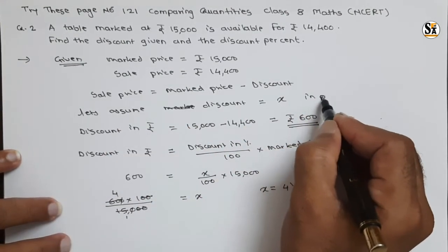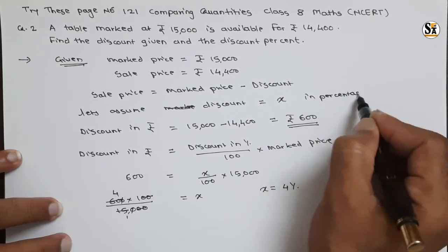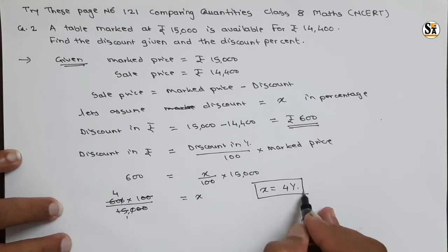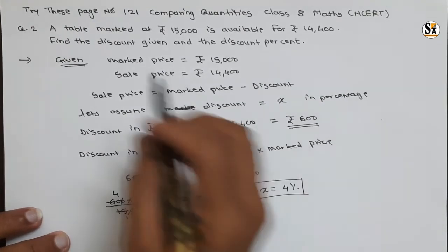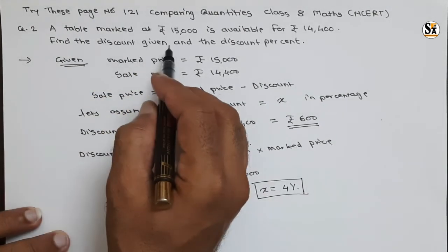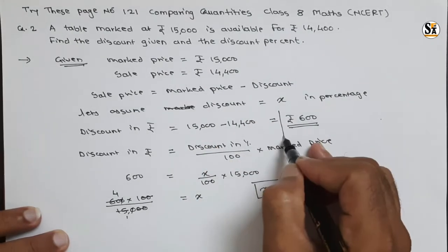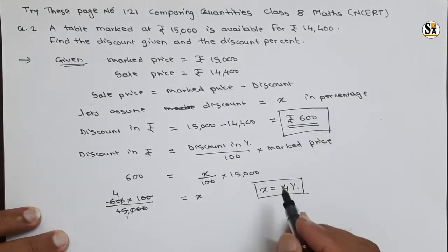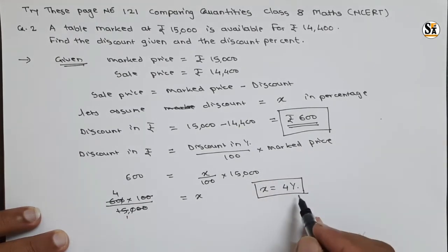Since we assumed x as discount in percentage, the discount in percentage is 4%. So the two answers are: discount in rupees is 600, and discount percentage is 4%.